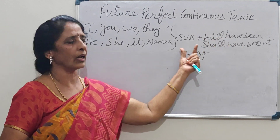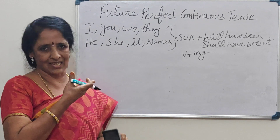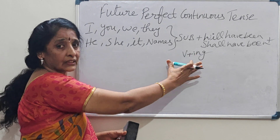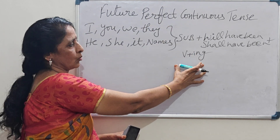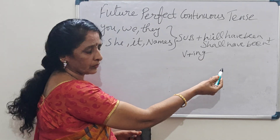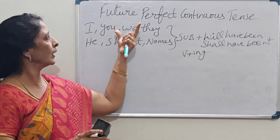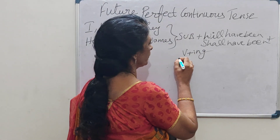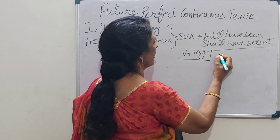In any sentence, you have to know the structure. First we write the subject, then 'will have been' or 'shall have been,' then verb plus ing. You should know the structure first before writing any tense.